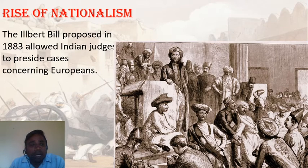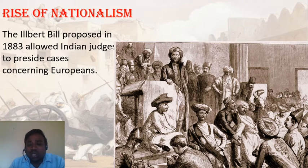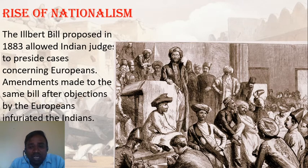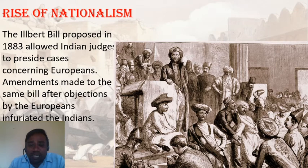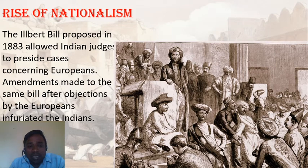Ilbert's Bill, proposed in 1883, allowed Indian judges to preside over cases concerning Europeans. However, there was a huge agitation by British officers against the bill, and it was subsequently amended. It was decided that no Indian judge could preside over cases concerning Europeans.